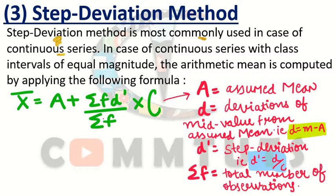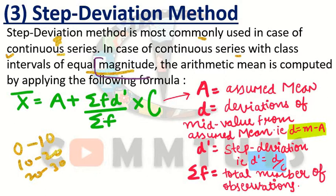In case of continuous series with class intervals of equal magnitude — that is, when the continuous series given to you has classes like 0 to 10, 10 to 20, 20 to 30 — the class magnitude means the difference between the limits, i.e., the class interval. In 0 to 10 the difference is 10, in 10 to 20 it is 10, in 20 to 30 it is again 10 — so the classes are equal.